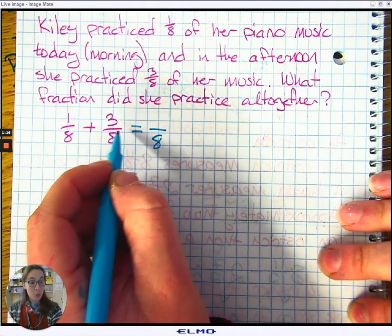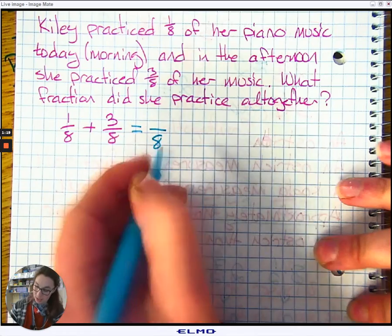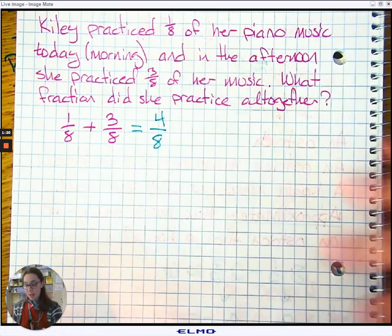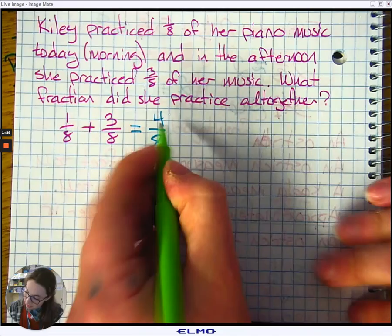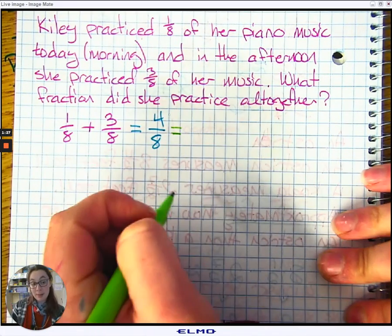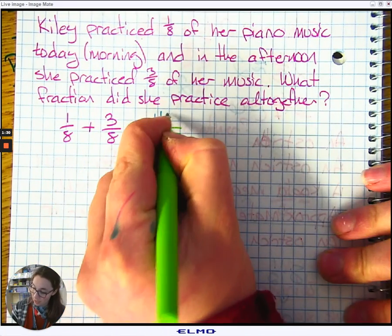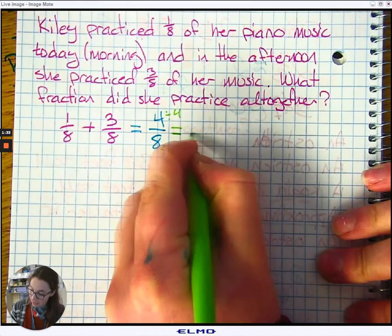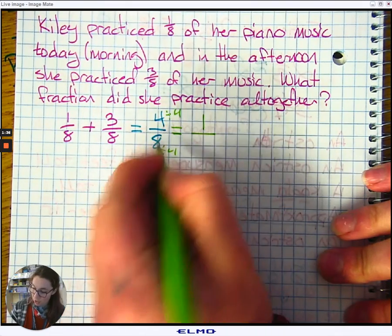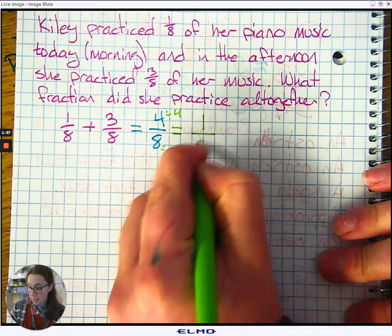Add the numerators, and the numerators only. One plus three is four. This is not in simplest form, and we want it to be in simplest form. We can divide both top and bottom by four, our greatest common factor here. And we will get one. Four divided by four is one. Eight divided by four is two.